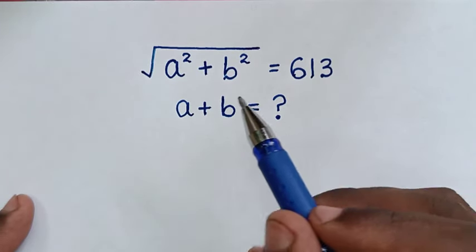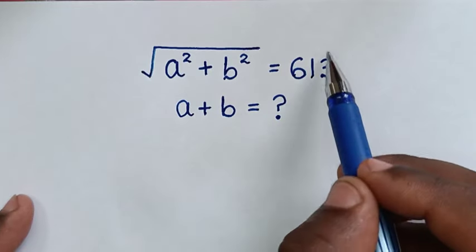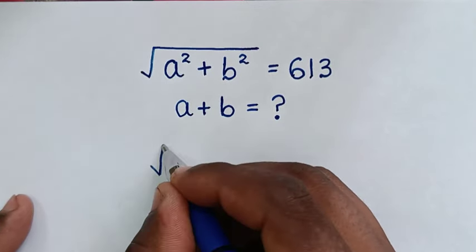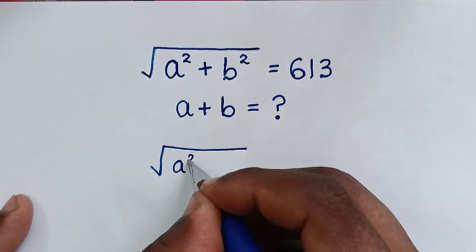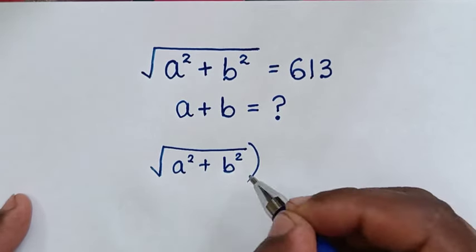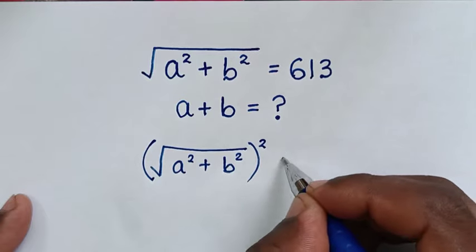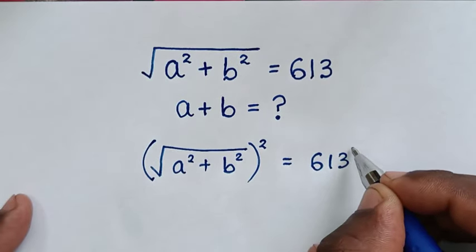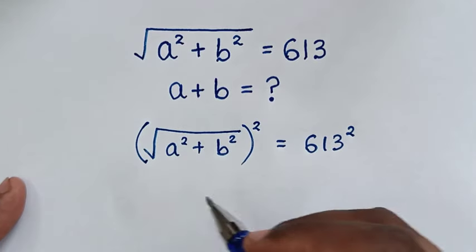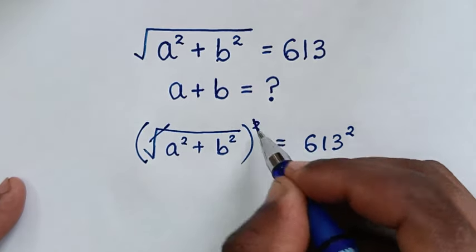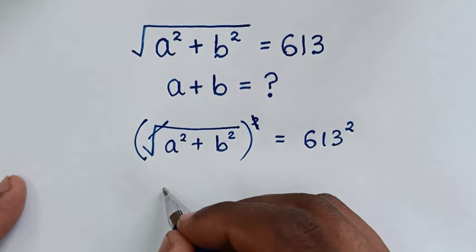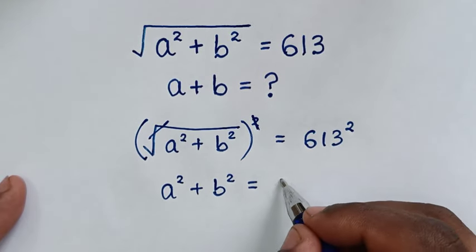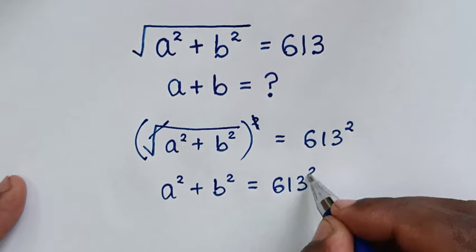In the first step, we remove this square root by applying squaring on both sides. So from square root of (a squared plus b squared), we square the left side and also square the right side which is 613. This square root then cancels with the square, giving us a squared plus b squared is equal to 613 squared.